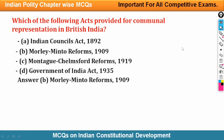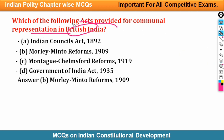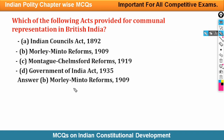Next question: Which of the following acts provided for communal representation in British India? The introduction of separate electorate for Muslims gave them communal representation in British India. The answer is the Morley-Minto Reform of 1909.